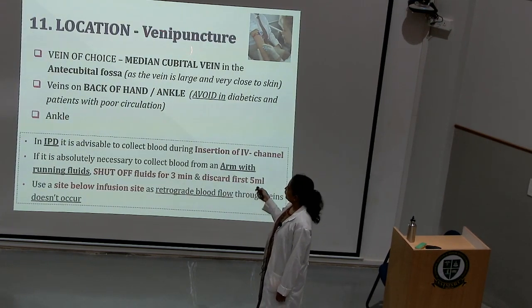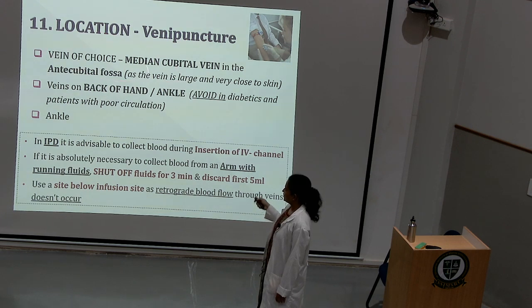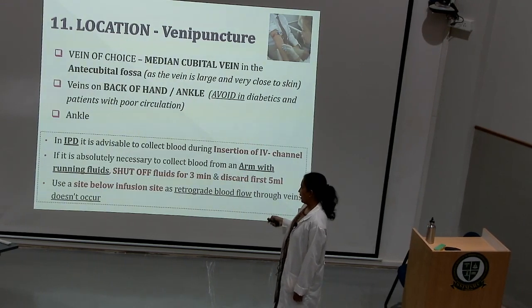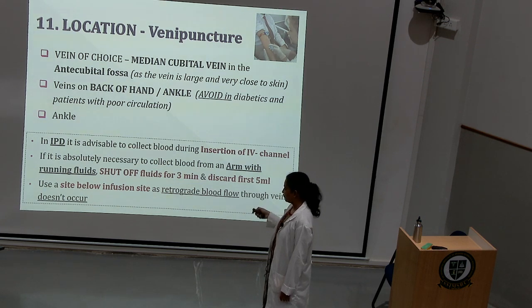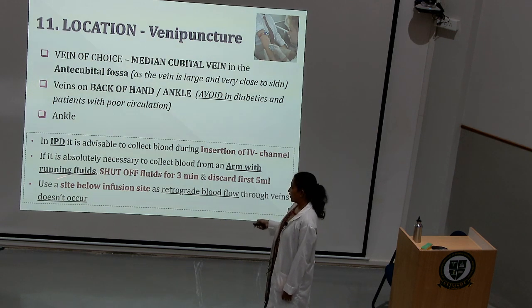Regarding needles, routinely used sizes are 18 to 25 gauge. Remember, the bigger the gauge size, the smaller the bore or lumen of the needle. For children, sizes between 22 to 23 are recommended. We choose the minimum size needed to achieve a quality sample. A size smaller than required is more likely to cause hemolysis, while too large may cause trauma to the patient. For collecting large volumes of blood, 18 gauge or even wider bore needles can be used.